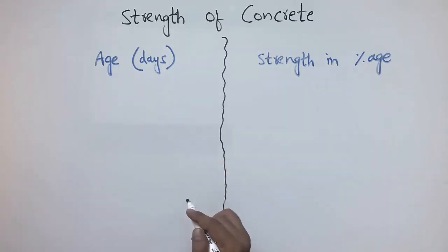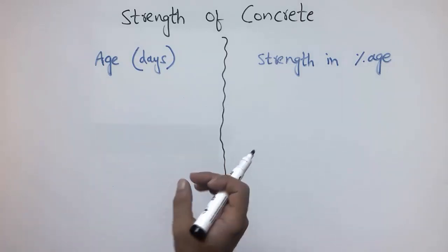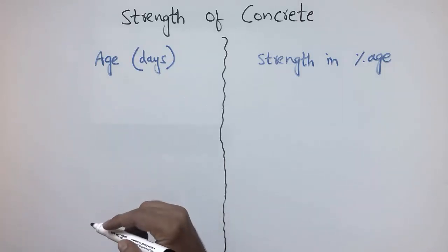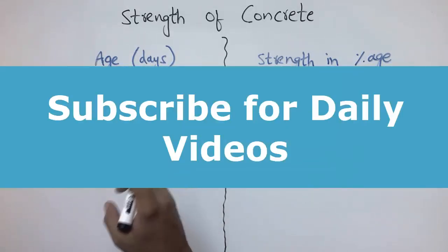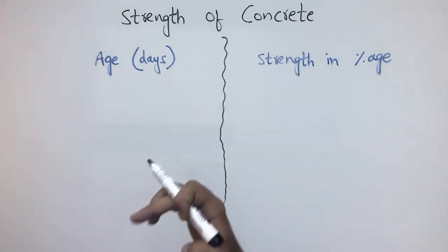Because concrete can never gain its hundred percent strength during the whole lifetime. When we pour the concrete, it takes time because the hydration reaction is going inside the concrete and the cement releases energy to gain its strength.